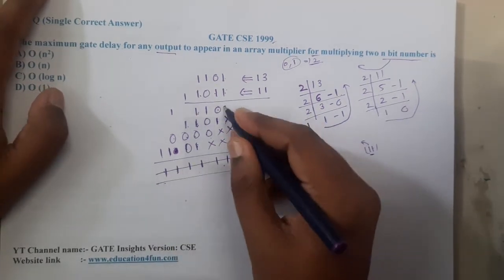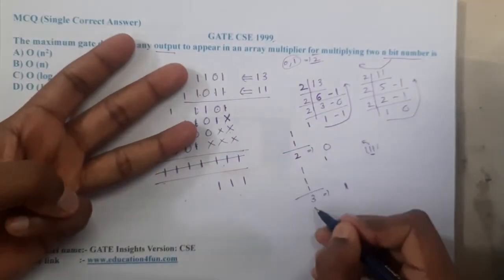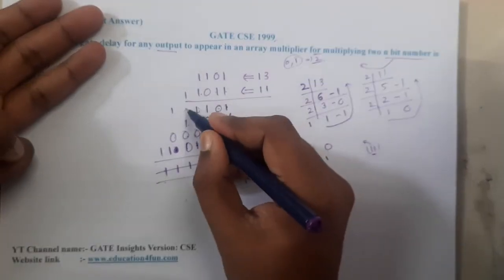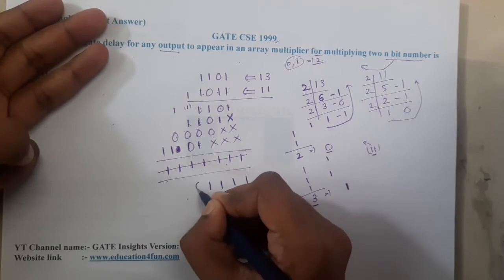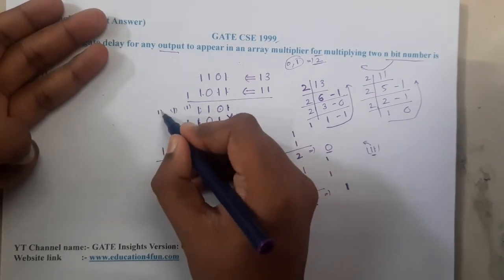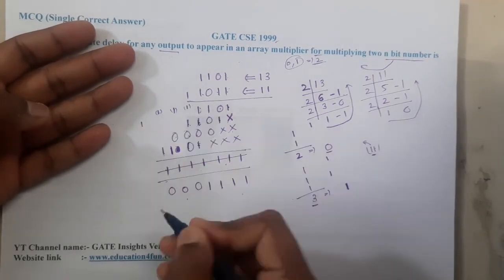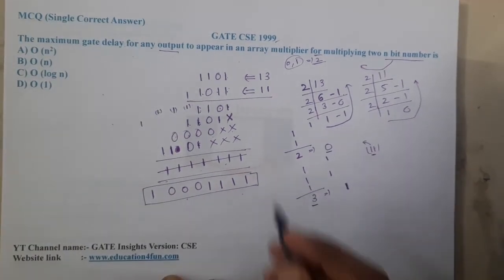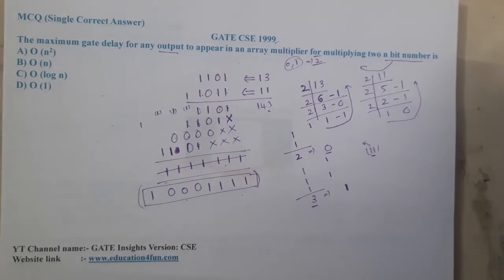Let us recalculate. Adding the partial products: in the rightmost column we get 1; next column 1; next 1; then 1+1+1=3, so write 1 carry 1; then 1+1=2, write 0 carry 1; again 0 carry 1; again 0 carry 1. The final result is 10001111. Most of you will ask what number this is — 13×11 = 143, and this is the binary representation of 143.